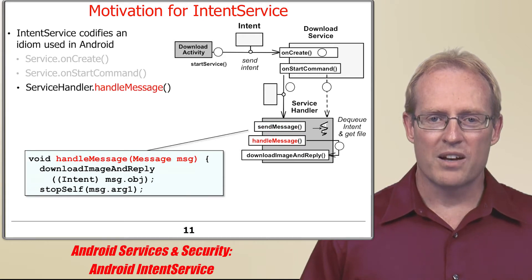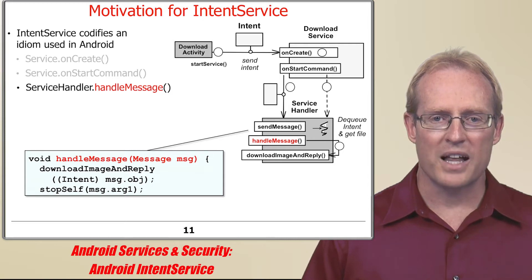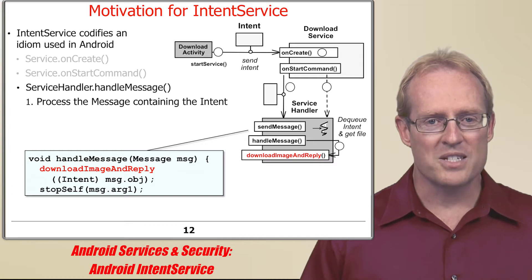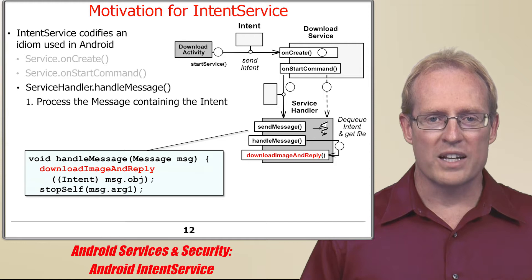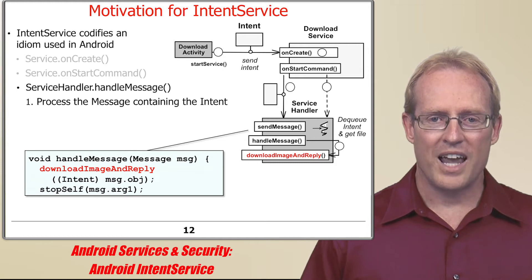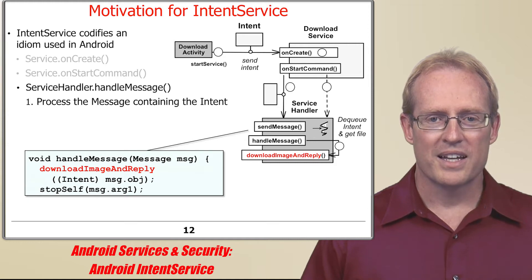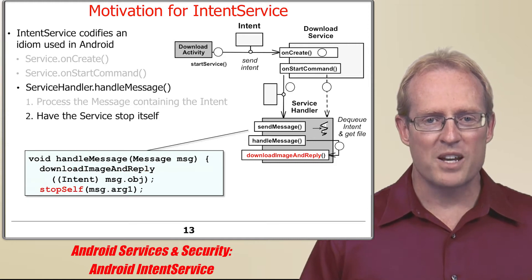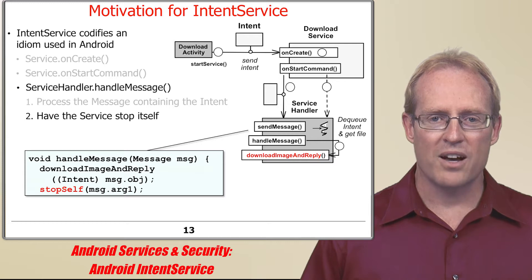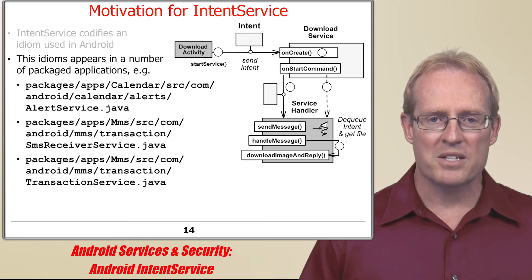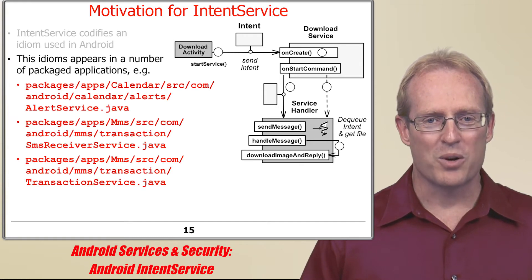The third step involves overriding the handleMessageHook method in the service handler subclass to process the message containing the intent, which in this case involves downloading the image, storing it in a local file on the device, and returning the path name to the activity so it can be displayed to the user. After the processing is finished, the service shuts itself down via a call to stopSelf. This idiom appears in a number of Android packaged applications, including the Calendar and MMS SMS applications, as shown at these path names.